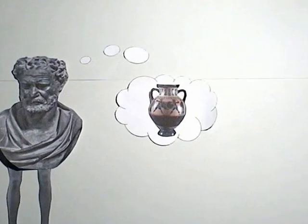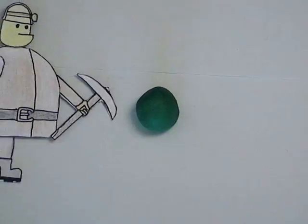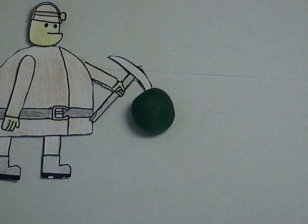The ancient Greeks believed, after the idea of Democritus, that you could divide matter into smaller and smaller pieces until you hit the smallest bit, which was called an atom, or atomus, which means indivisible in Greek.